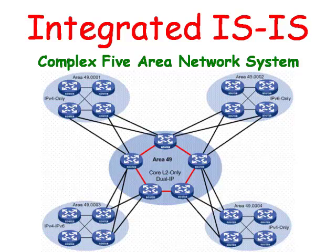In the illustration, we can see that in the center there are central redundant backbones that connect the four areas surrounding it. All the routers in the backbone are Level 2 routers. The routers that they are connected to in other areas are Level 1, Level 2 routers. And the rest are Level 1 routers.